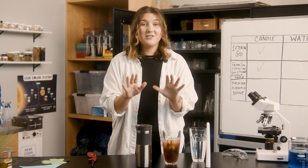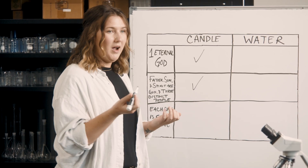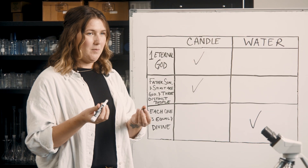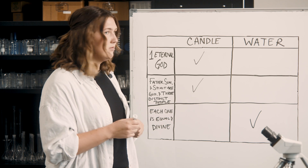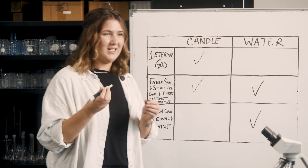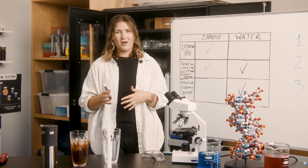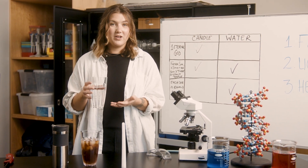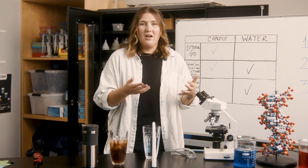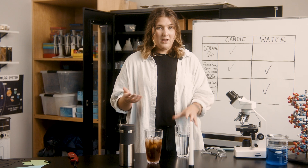Let's check our lab report to see if this meets the requirements — starting with number three this time. Each part is equal and shares the same nature: check. All three pieces are made of the same thing, H2O. Number two, the Father, Son, and Spirit are each distinct persons: check — water, ice, and vapor are three distinct things. Number one, there's only one eternal God — okay, now this is where our symbol starts to fall apart. The cup of water can't actually be ice, vapor, and liquid all at the same time. Using this to explain the Trinity makes it sound like God turned into Jesus, who then turned into the Spirit. But all three are eternal, meaning they always exist together at the same time. And water can really only be in one place at one time, and God can be anywhere — we can't really contain him in a little cup.